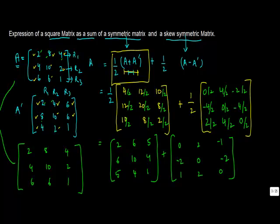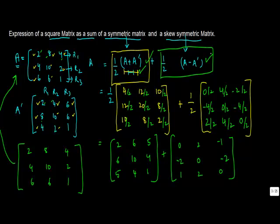Now if you compare this result, you will see the entries 2, 4, 6, 8, 10, 6, 4, 2, 1 — which matches the original matrix A. So ultimately we found out that the sum of the symmetric matrix and the skew-symmetric matrix is equal to the original matrix itself. And hence this theorem holds true.